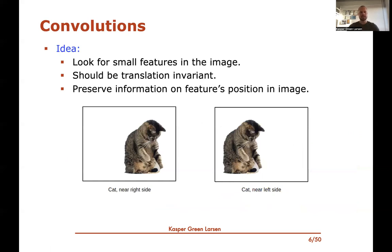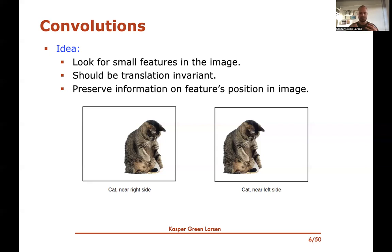Convolutions are an idea that will remedy this. The basic idea is that a convolution searches for small features in the image, and it should be translation invariant — whether the cat is on the right or left side of the picture, the neural net should still predict a cat. The convolution should do the same thing regardless of where the feature is positioned, yet still preserve information about where in the image that feature was found.